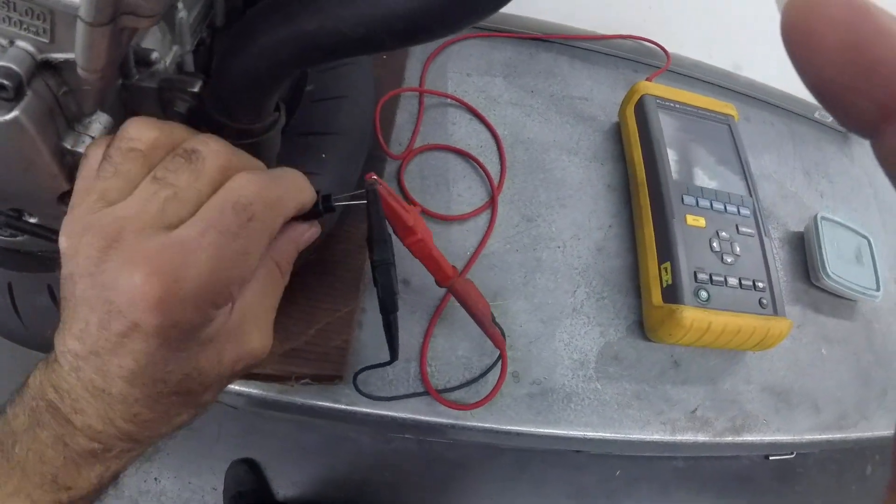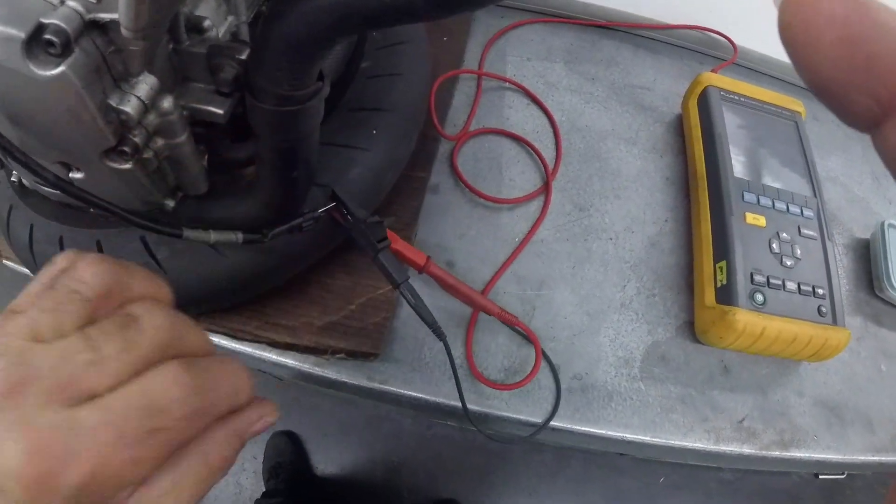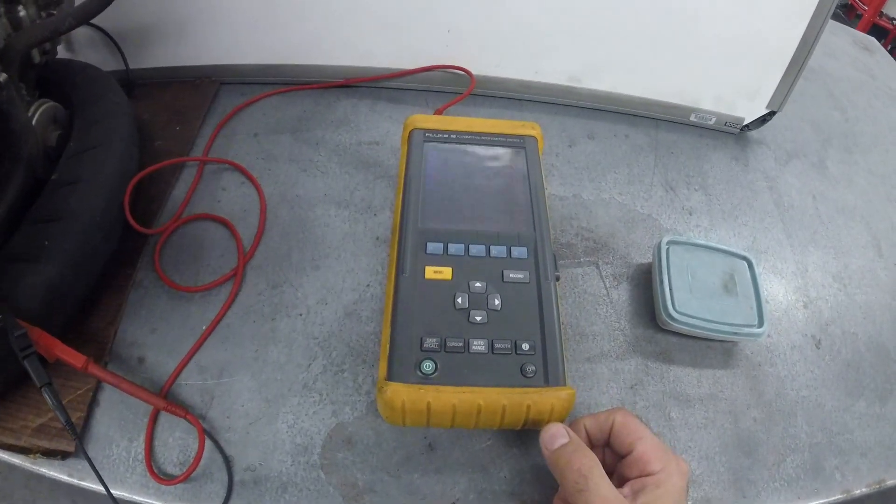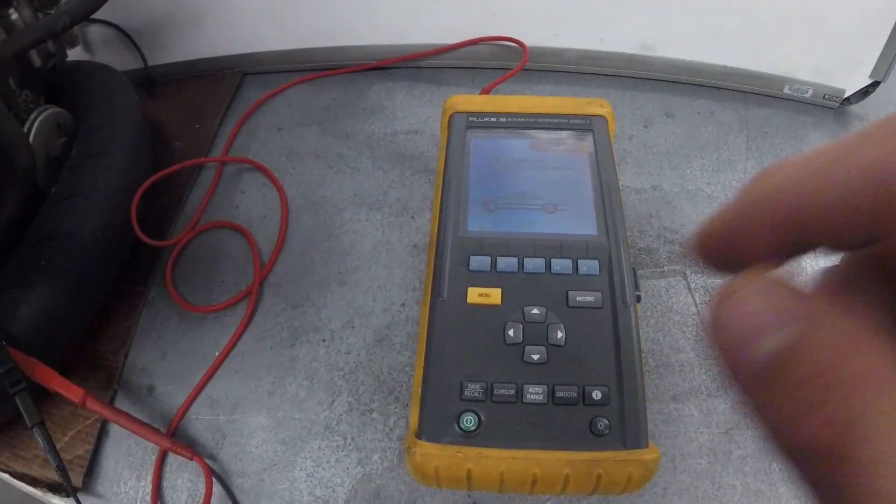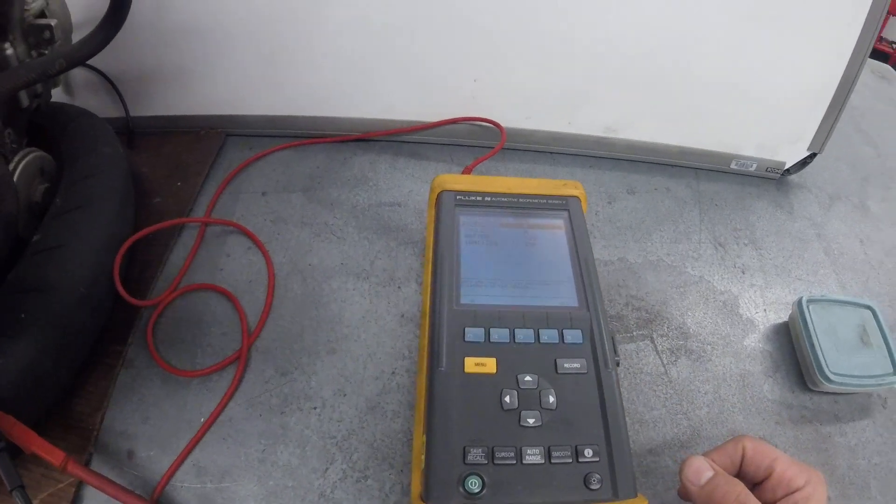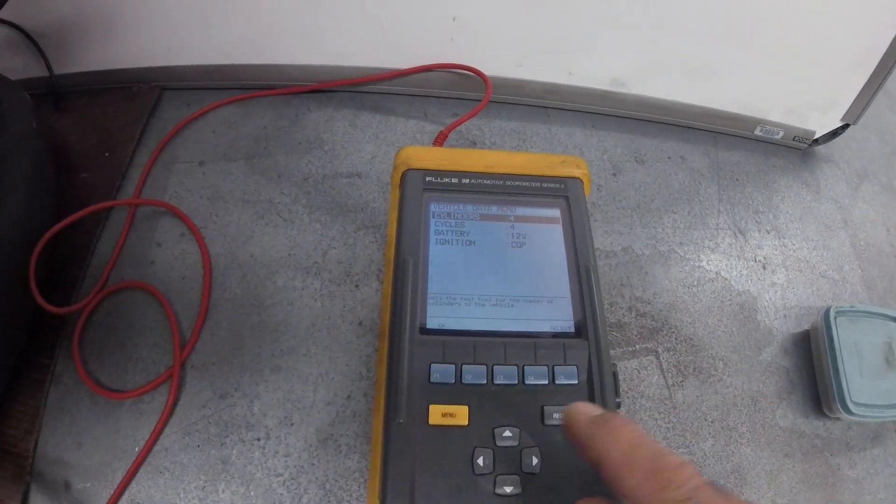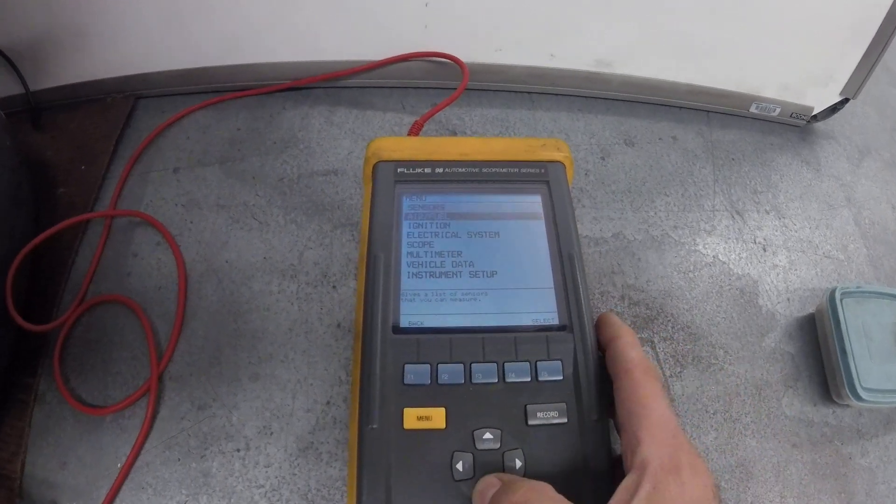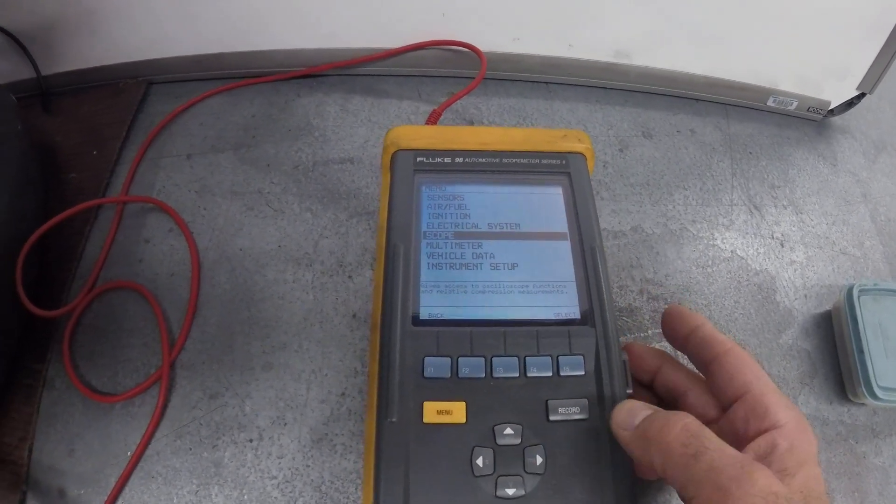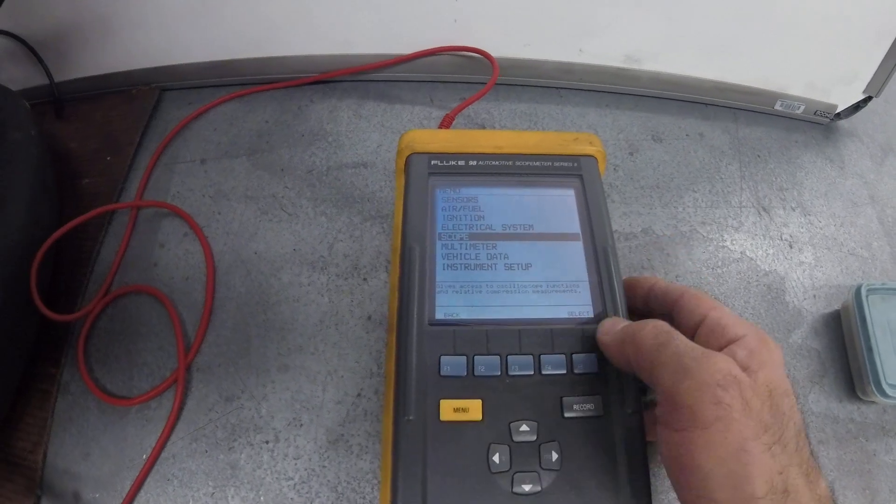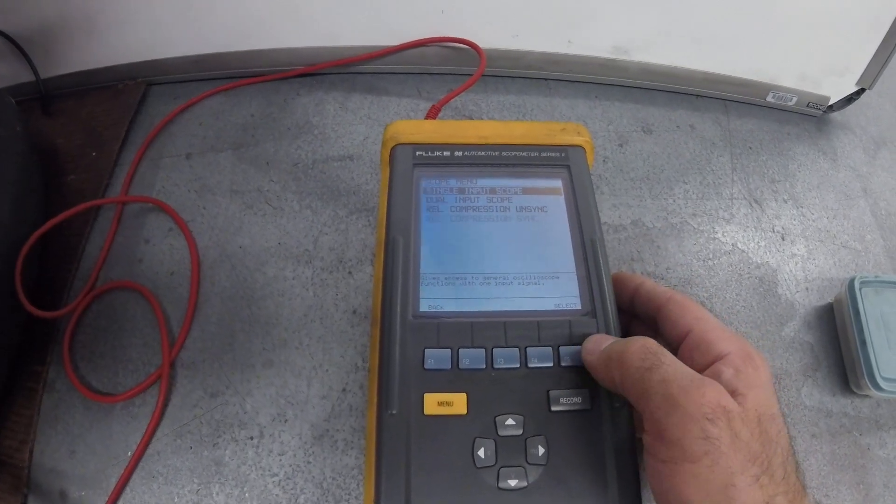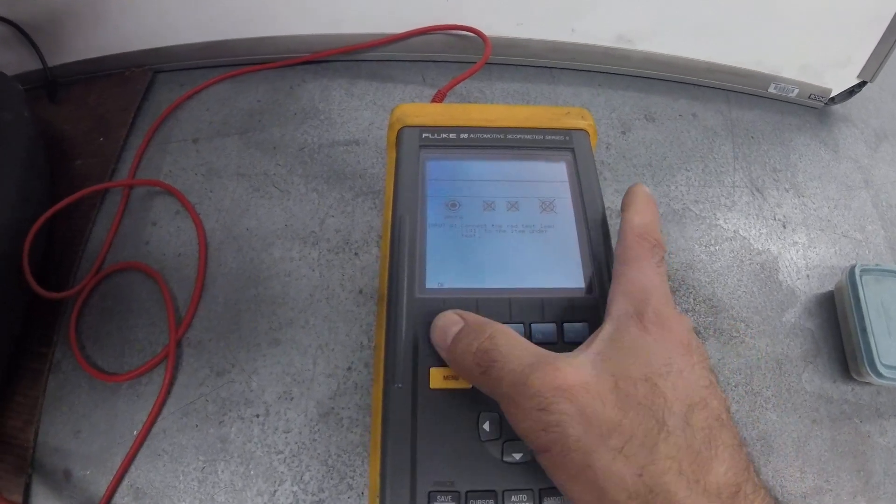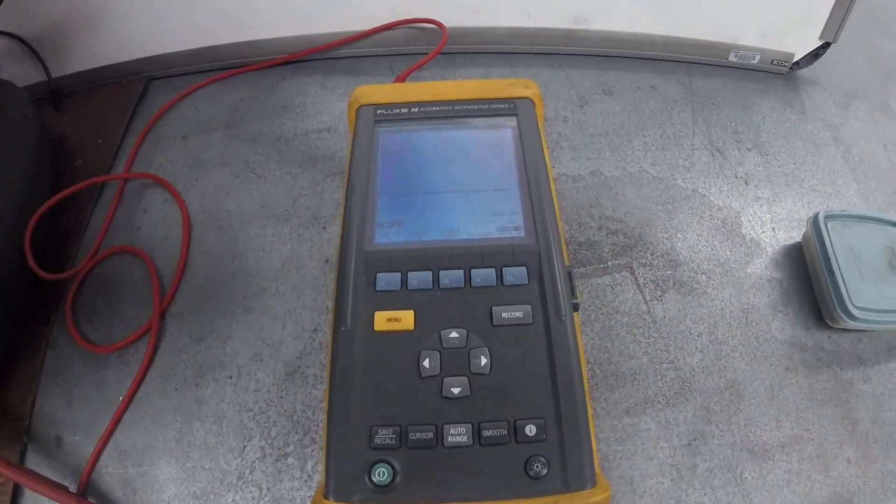And be sure the wires are not touching each other. Now I'll turn the scope on. I'll go all the way down to scope and hit select. Now the scope is ready.